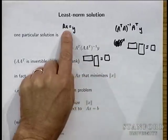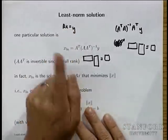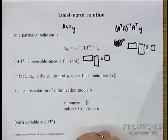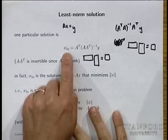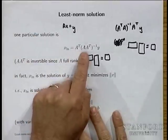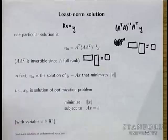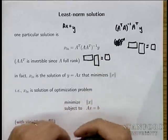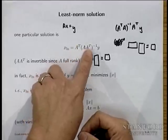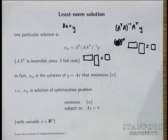So one particular x that satisfies Ax equals y is the vector of least norm. That's the least norm solution, x_ln, given by the formula: A transpose times (A A transpose) inverse times y. It's easy to see it's a solution because if you multiply by A, you get A A transpose times (A A transpose) inverse times y, and they annihilate each other, giving y.